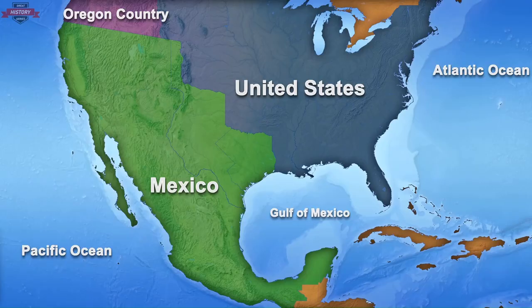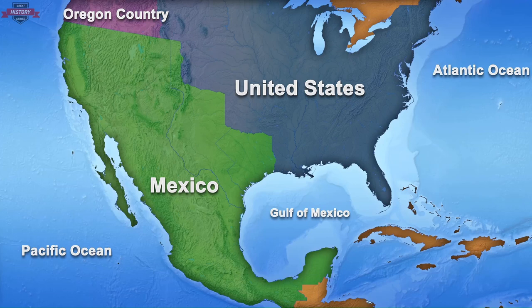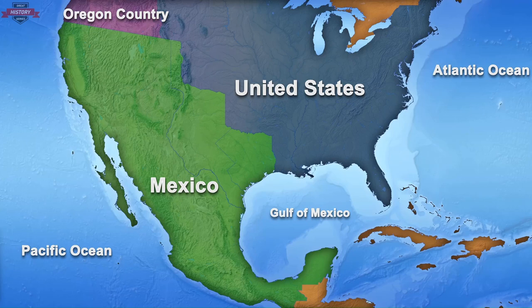When Mexico became independent from Spain in 1821, its boundaries were very different from what we know today. Mexico was a large country. However, most of its population was concentrated around Mexico City, leaving large areas of land unpopulated. In the first 10 years after its independence, Mexico authorized American immigration into Texas to make this remote province more productive. However, things started to get out of control for Mexico rapidly, as American immigrants soon outnumbered the Mexican settlers.